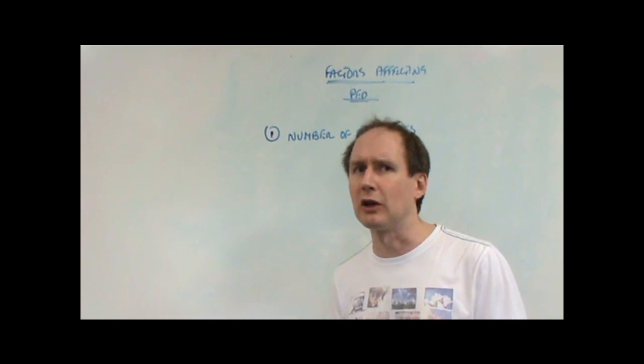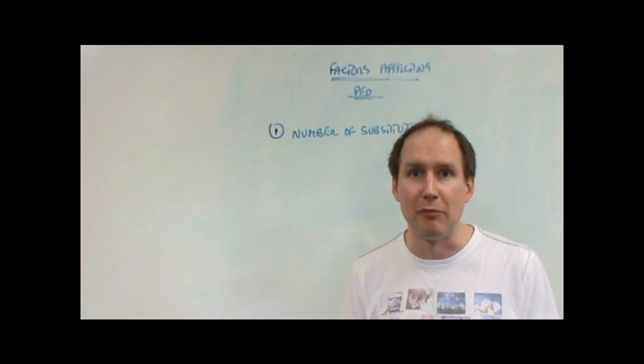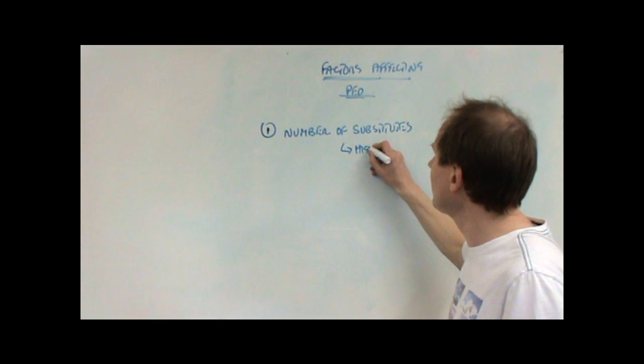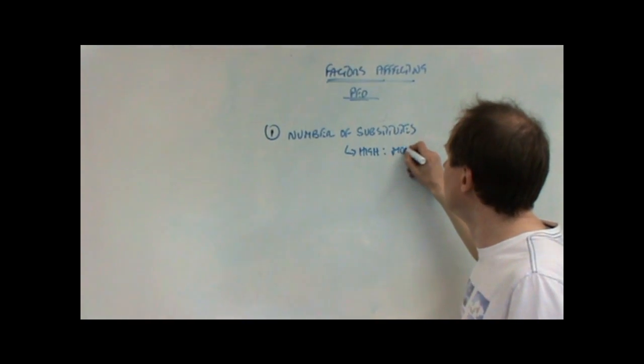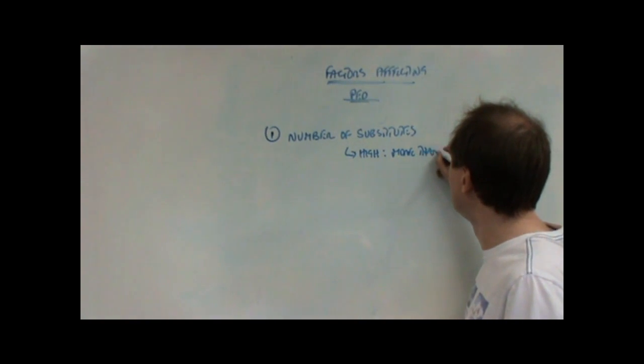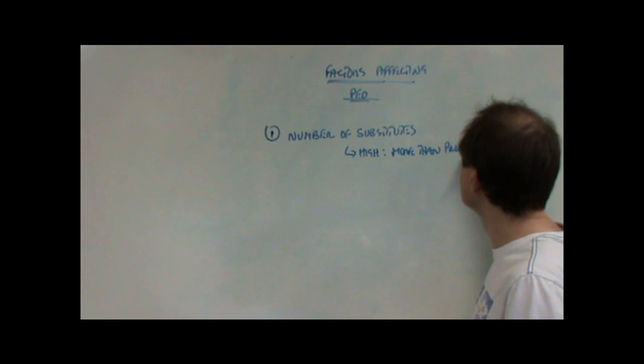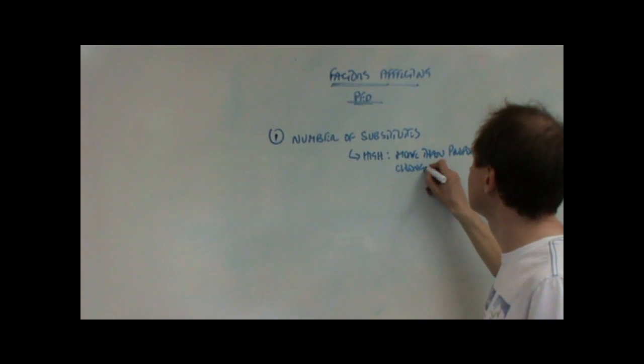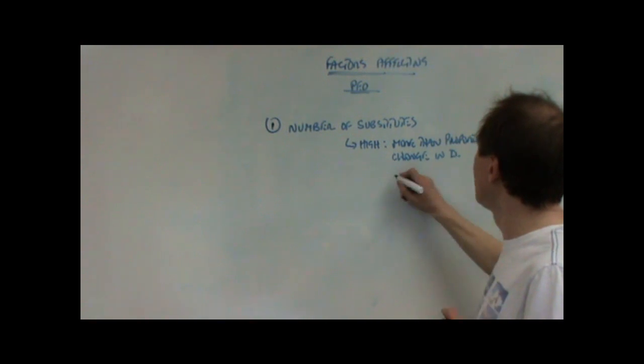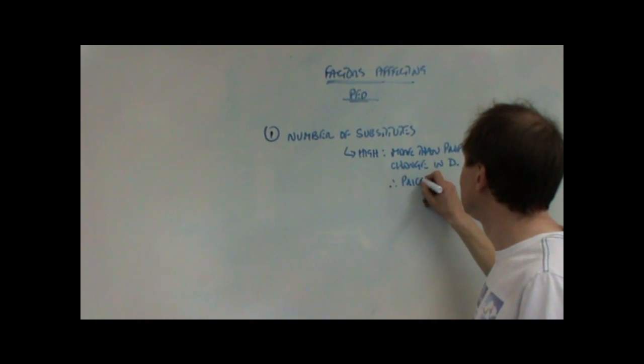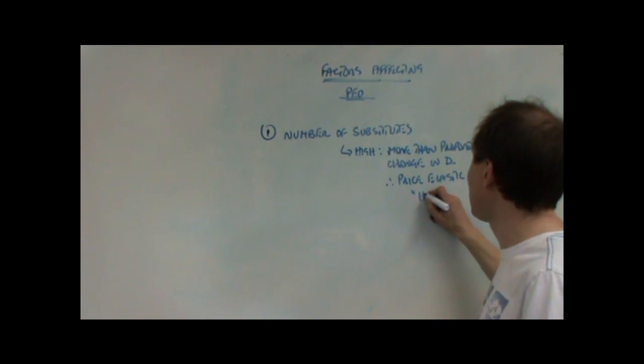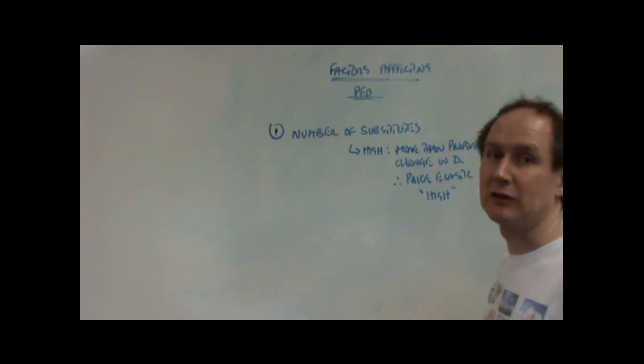So if the price of your product goes up significantly, well, I won't buy it—I'll buy something else. A high number of substitutes tends to lead to a more than proportional change in demand. Therefore, demand tends to be price elastic, or a high price elasticity of demand.